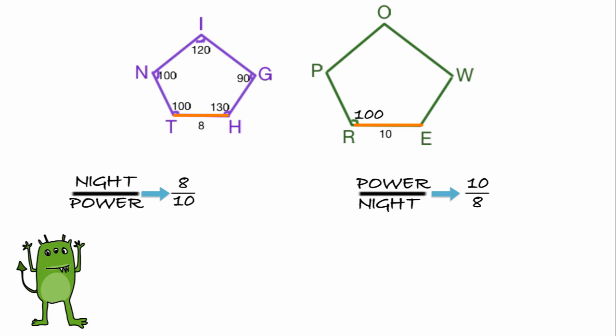So, how can we use this? Well, if I knew the side WE measures 6 inches, we could find the length of GH by setting up a ratio. Since GH is the corresponding side in night, the ratio of night to power is 8 to 10, and X and 6 are the measurements of corresponding sides.